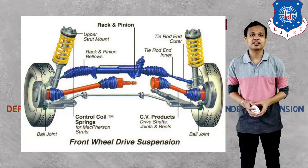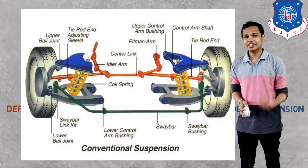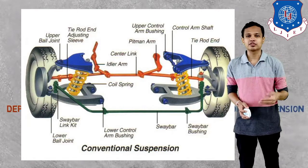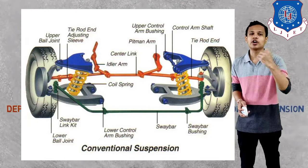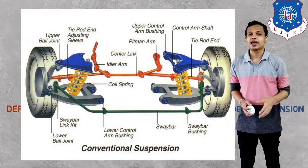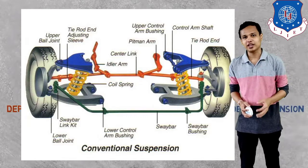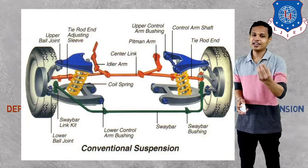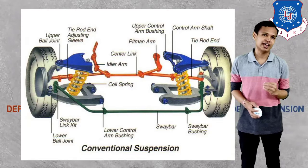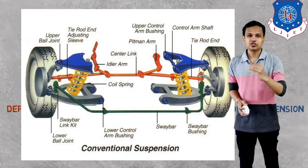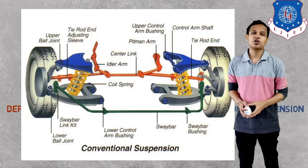The second type you are seeing is the wishbone suspension system. In the case of the wishbone suspension system there are two arms — lower arm and upper arm — given in the shape of a wishbone. In between those arms, the absorber and coil spring assembly are arranged, giving better shock absorbing capacity compared to the MacPherson strut. Generally in a vehicle, the MacPherson strut is given on the front side and the wishbone suspension on the rear side.